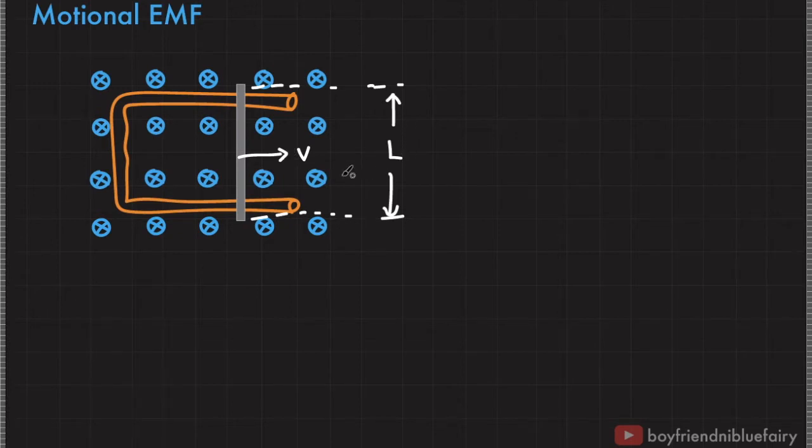To derive the expression for the induced EMF, let's focus on one mobile charge in this rod. For example, let's look at this one mobile charge. When the rod moves with velocity V, the charge experiences a magnetic force due to the magnetic field. From our previous lecture, this magnetic force experienced by this charge, let's put Q, is equal to Q V cross B, or cross the magnetic field.